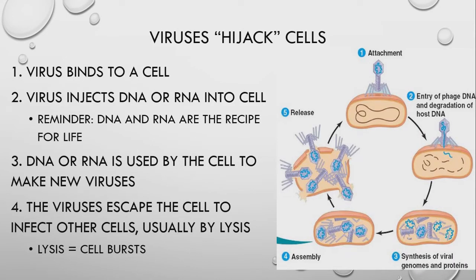So how does a virus go about hijacking a cell? We have a nice little diagram here on the right side with four general steps to our viral cycle. The first step is that the virus does something called bind to a cell. So basically this is our virus up here and this is our cell, and the virus has to come and attach to the cell — that's what we mean by bind to it. Once it binds to the cell, then it injects what's called DNA into the cell.